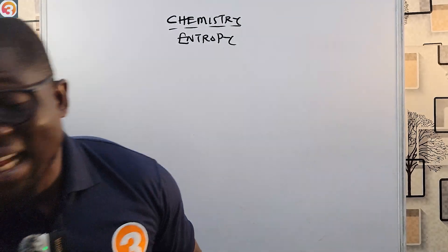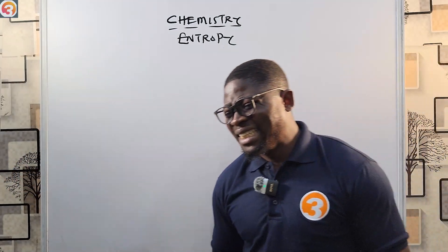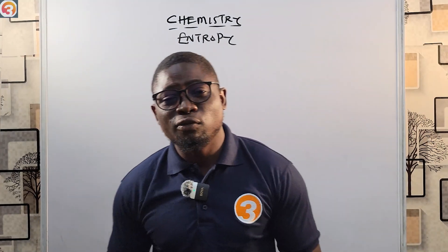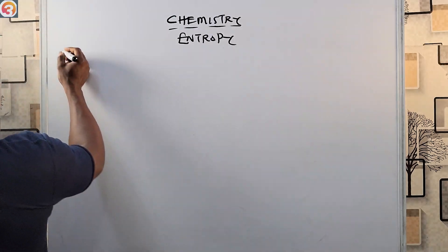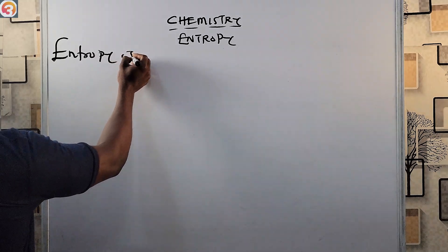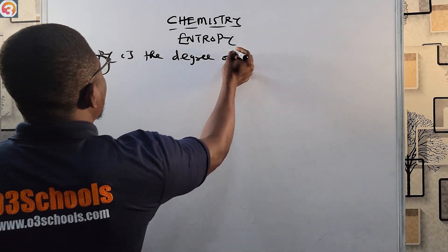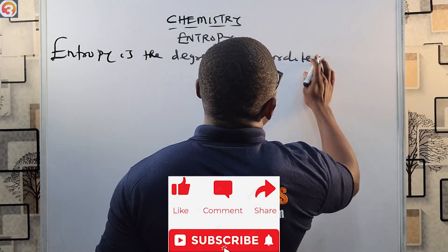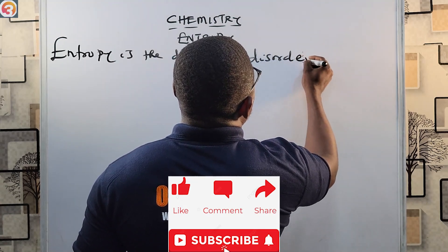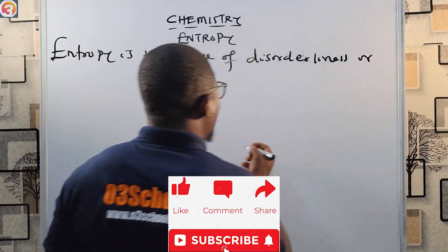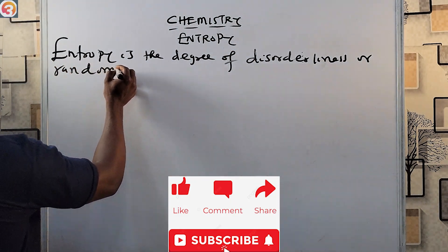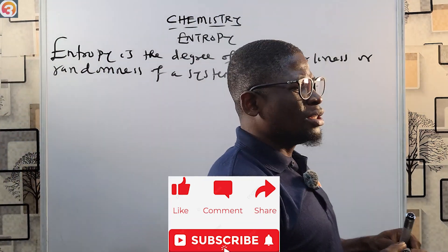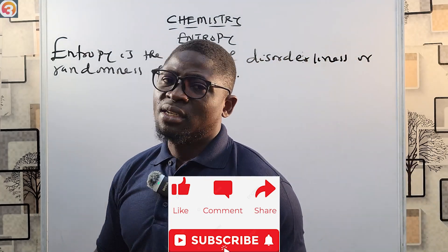In the last class we hinted about entropy — we said entropy is the degree of jaggedness, the degree of scatteredness, the degree of disorderliness or randomness of a system.